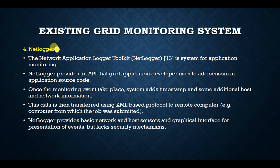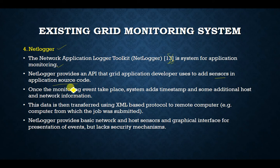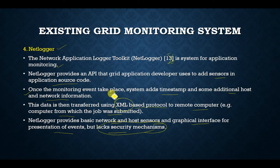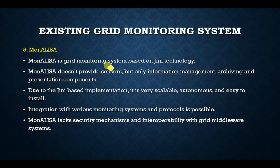The fourth system is NetLogger — the Network Application Logger Toolkit — a system for application monitoring rather than host monitoring. NetLogger provides an API that grid application developers use to add sensors in application source code. When a monitoring event occurs, the system adds a timestamp along with host and network information, and data is transferred using an XML-based protocol to the remote computer from which the job was submitted.